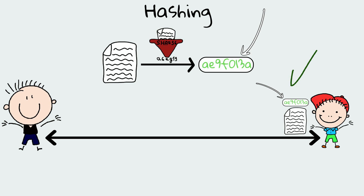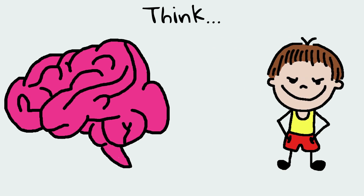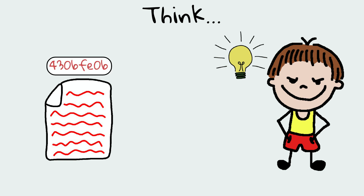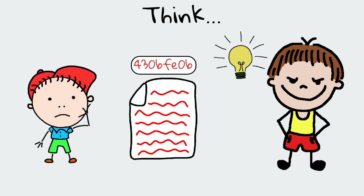However, think for a second — do you think this is enough? What would a malicious Chatty do to alter the data and still pass the integrity check? After all, hackers are smarter than that. Why not alter the message and also send an altered hash? How then can Joe know that both the hash and the data have been modified?